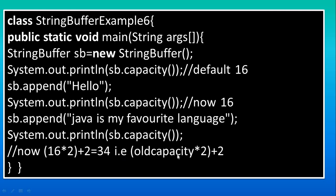The formula is: old capacity × 2 + 2. Because we have added more characters — more than 16 but less than 32 — this formula applies. Once the count exceeds 16, capacity changes to 34 (16 × 2 + 2). Once it exceeds 34, it becomes 70 (34 × 2 + 2), and so on. So the tutorial is over. If you have any doubts, you can comment. Thank you.